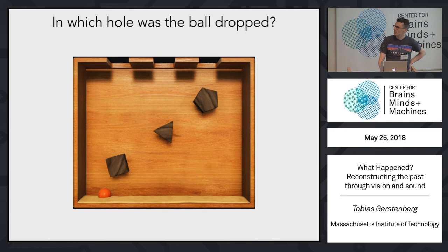So now that you know how to do predictions, I can also ask you to do the opposite, like to infer from seeing the final location of the ball where it was dropped. So I'm going to use my hand again, and please clap again where you think the hole was that the ball was dropped in.